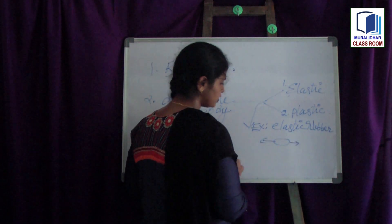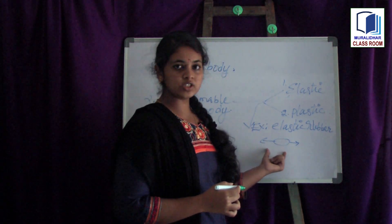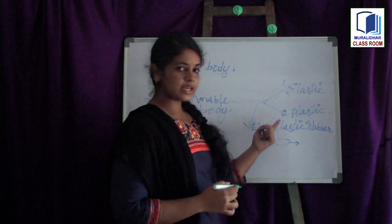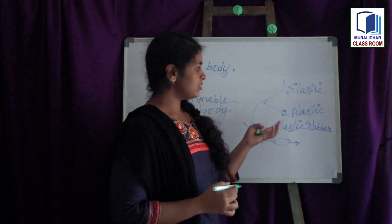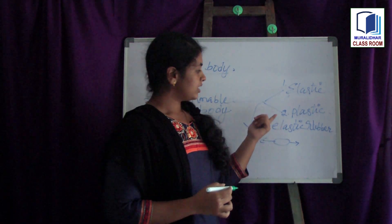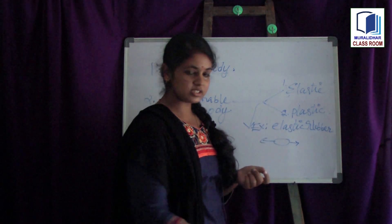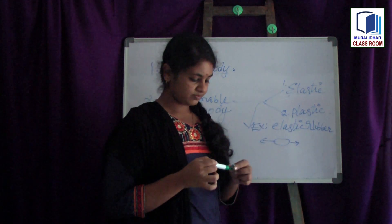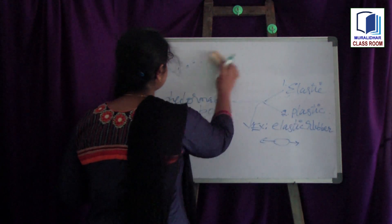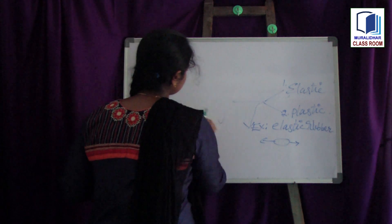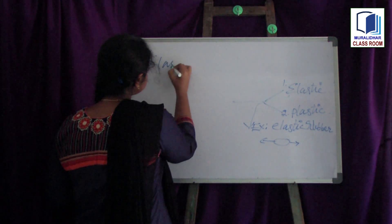An example for elastic body is elastic rubber. If I apply some force and stretch the elastic rubber, it extends up to some limit, and after I release the force, it comes back to its original position. This is an example for elastic body. For a plastic body, it does not regain its original shape — examples include any plastic bodies.